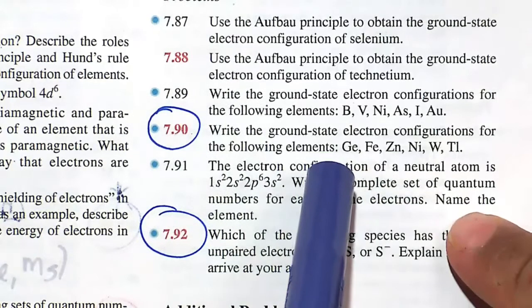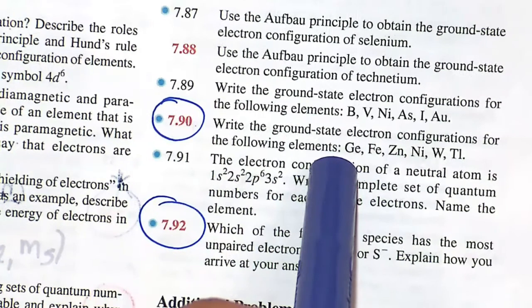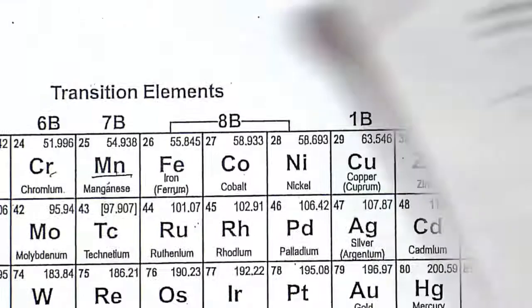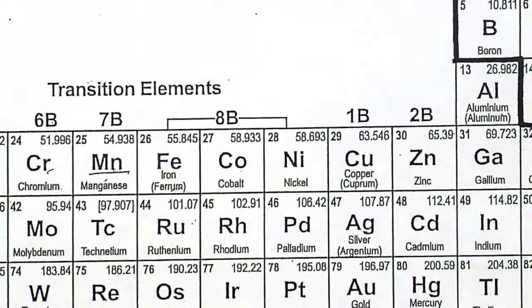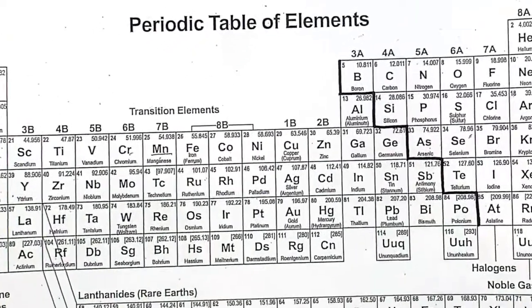So in this video, we'll go over the electron configurations for these six elements. We'll first start off with element Ge. So let's get our periodic tables out.